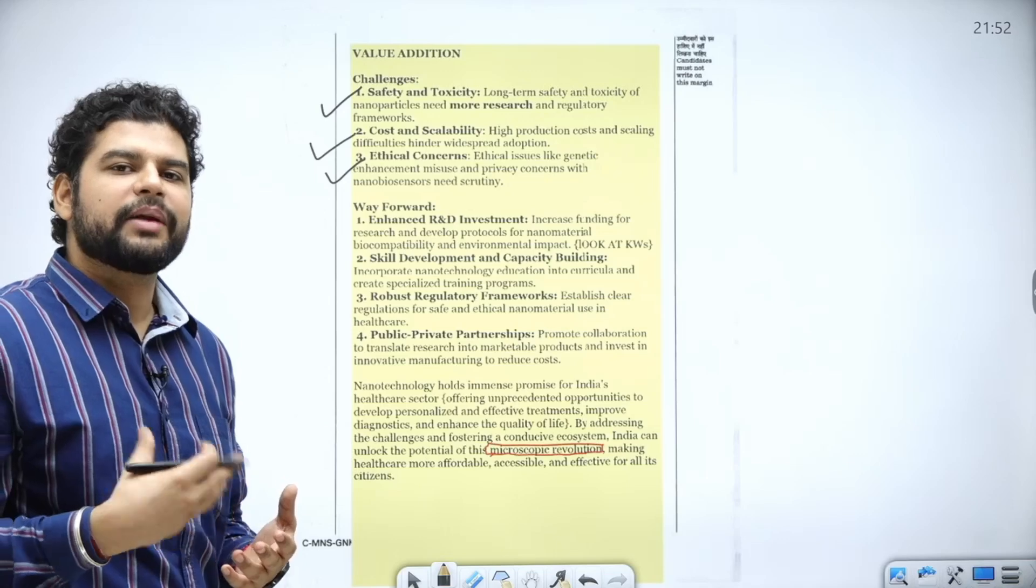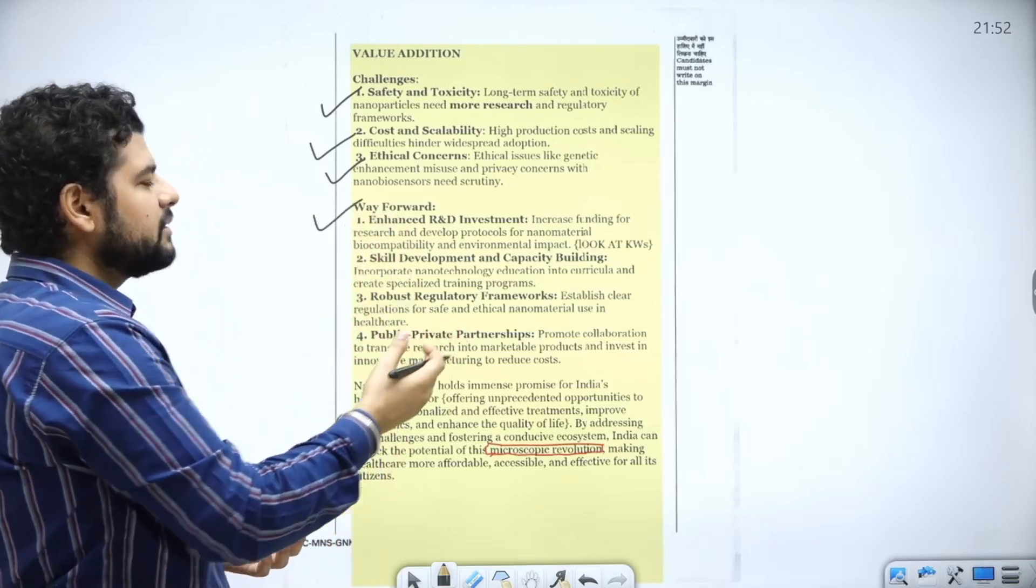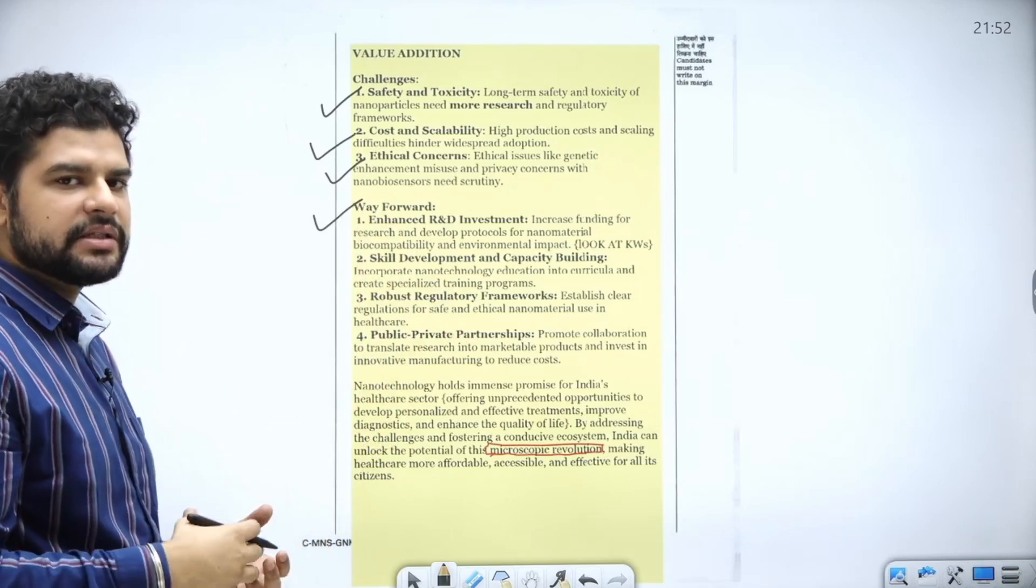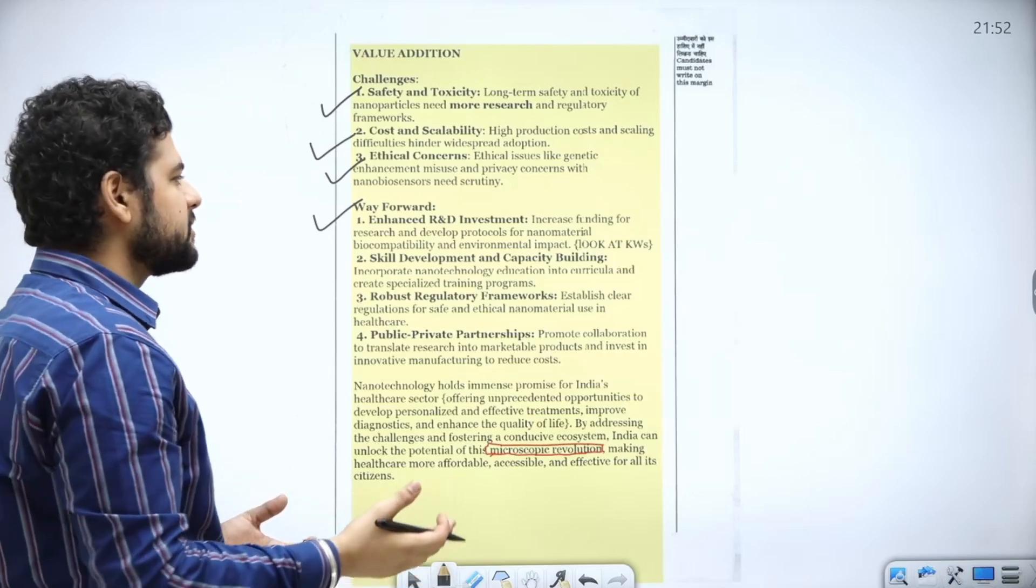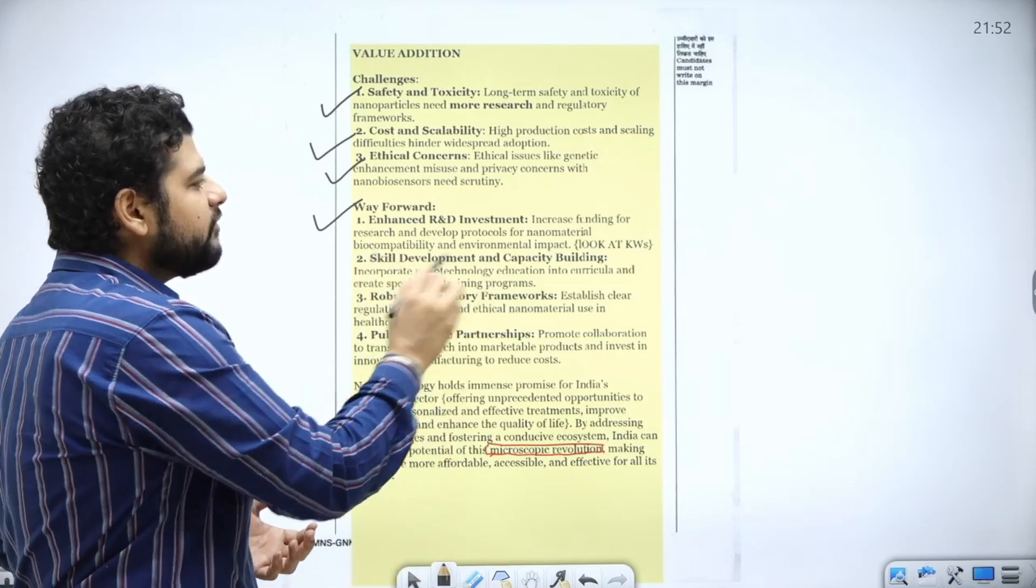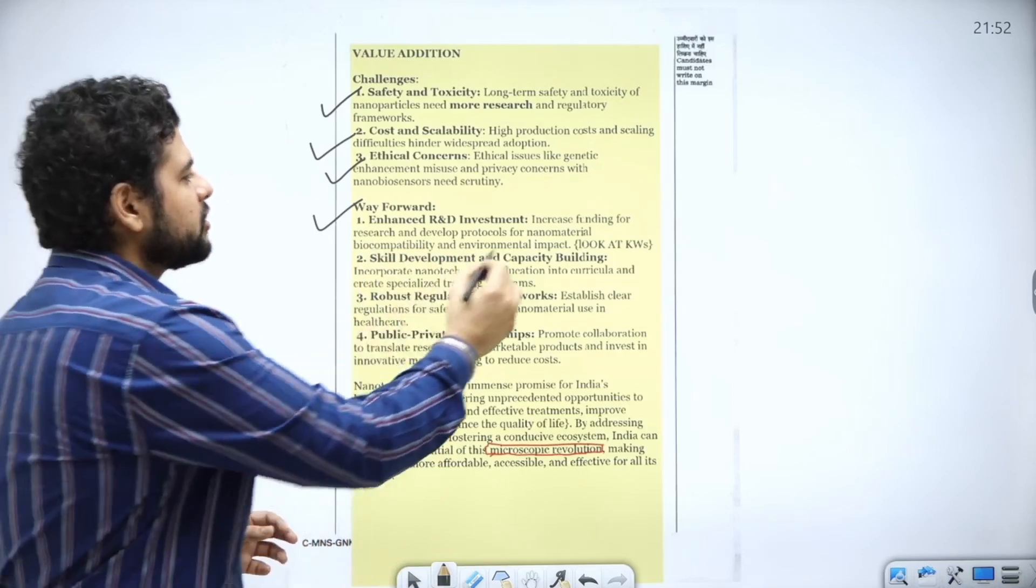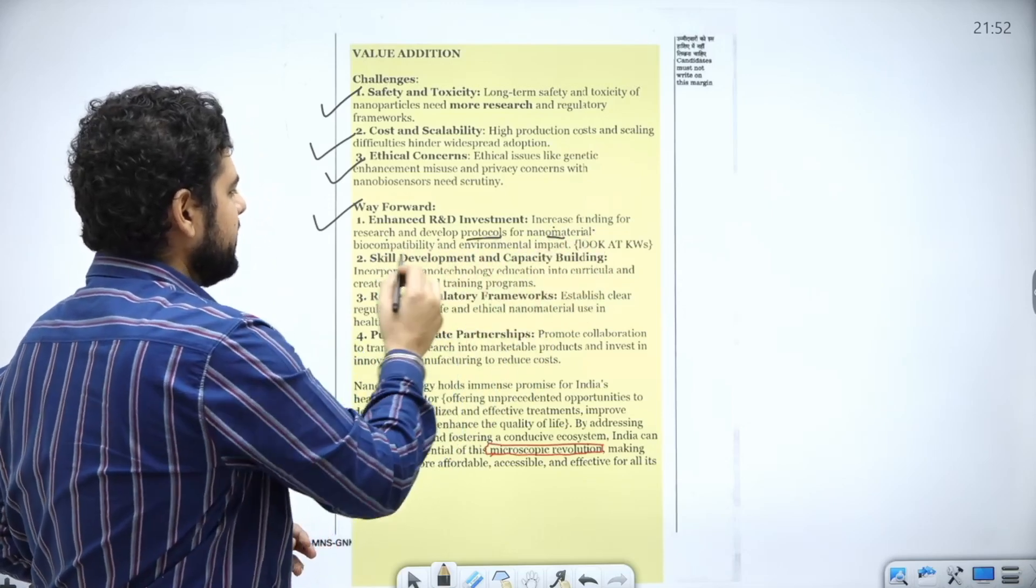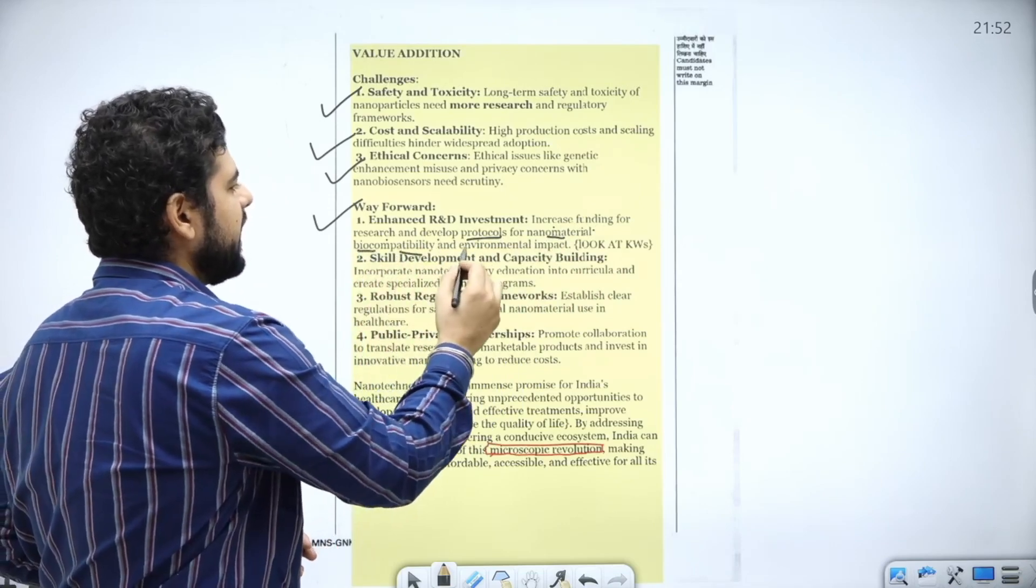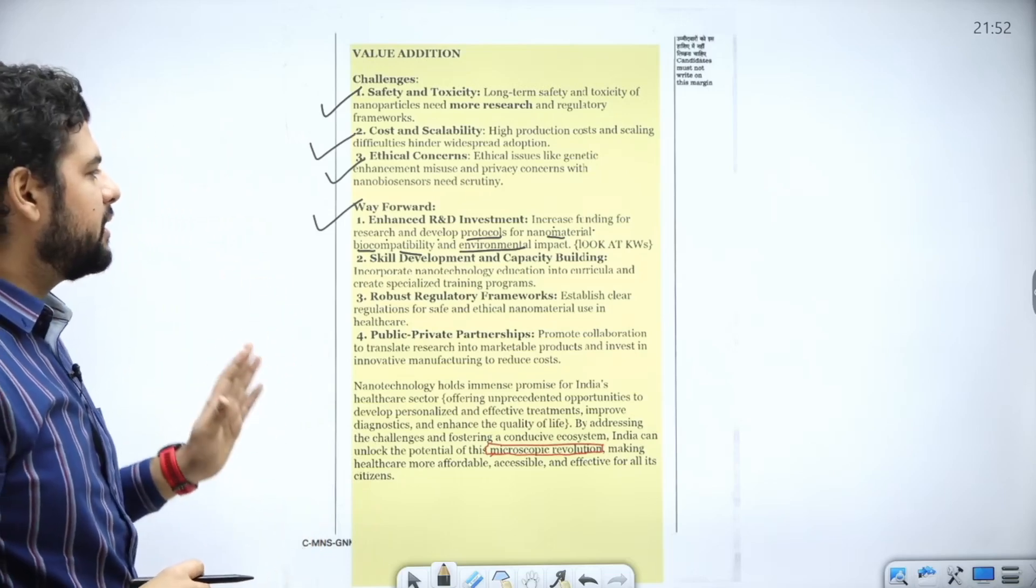What is the way forward? Enhance the R&D investment because this is a key technology of the 21st century. The way I have written this is full of keywords. Increase funding for research and development, protocols for nanomaterial biocompatibility and environmental impact. Focus on keywords like biocompatibility, environmental impact. Don't just mention that you need to increase R&D. Mention why.